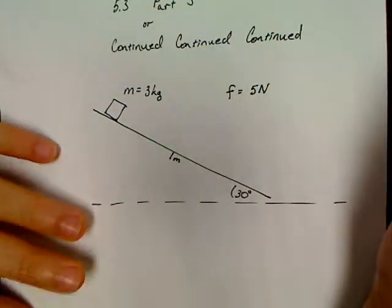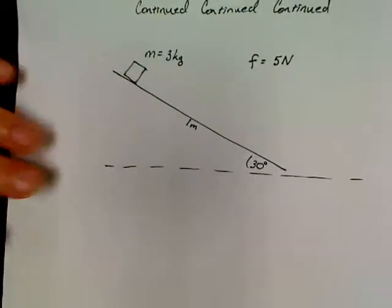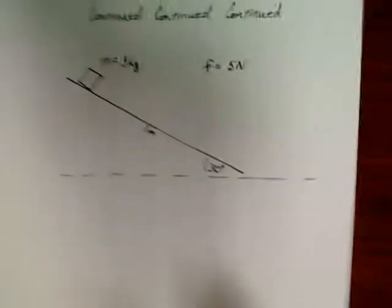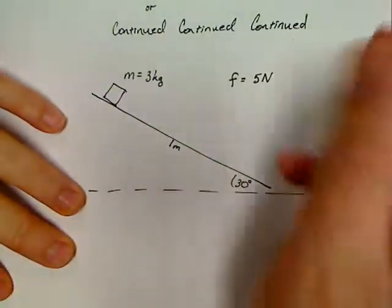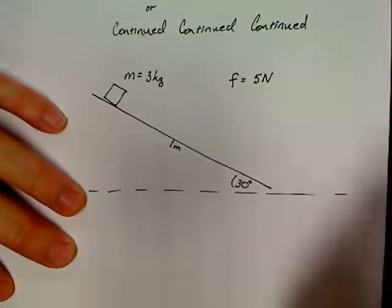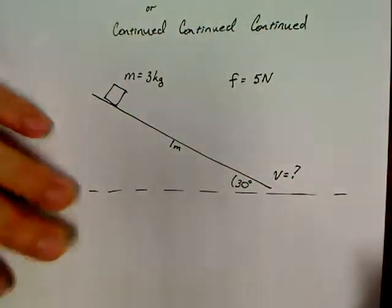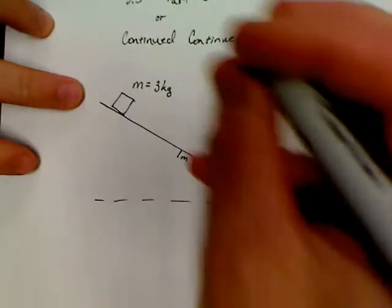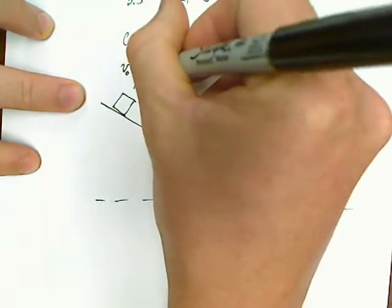So a frictional force of five newtons on the object — that's pretty much everything stated in the problem. It wants us to find the speed when the crate reaches the bottom of the ramp. The speed at the top is zero, since it starts from rest.